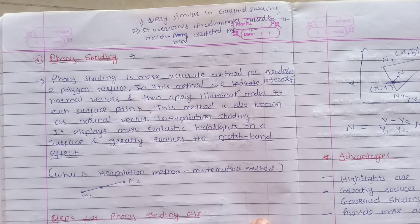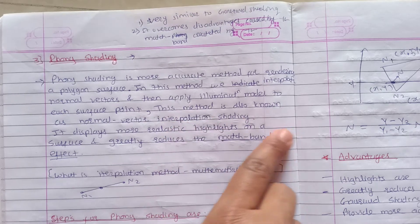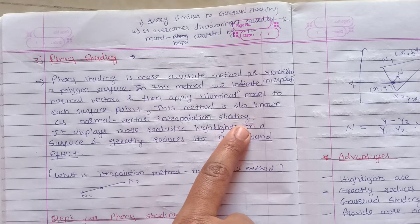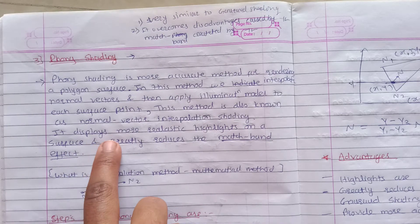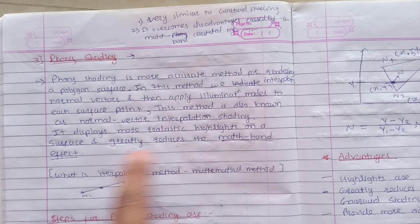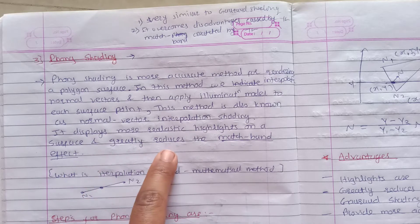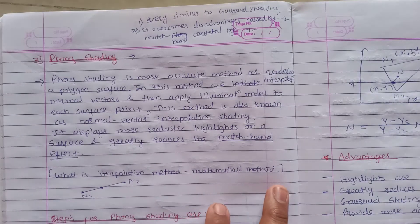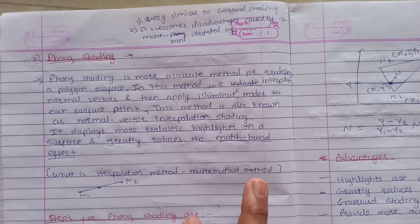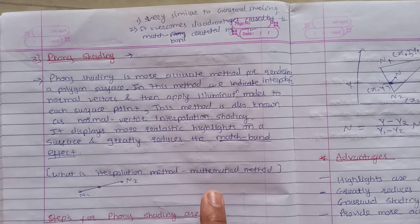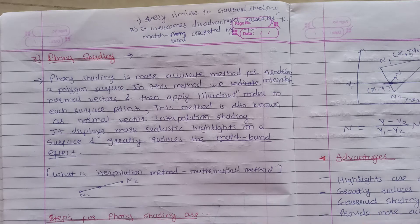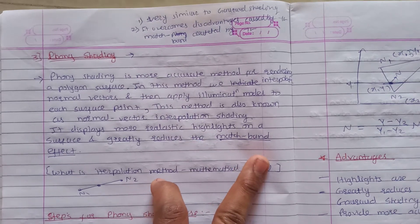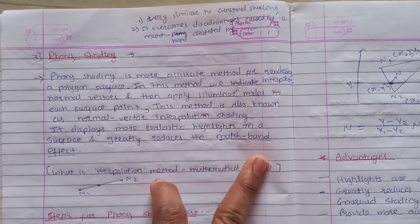This method is also known as normal vector interpolation shading. It displays more realistic highlights on the surface and greatly reduces the Mach band effect. The Mach band is the disadvantage of Gouraud shading which is greatly reduced by this Phong shading.